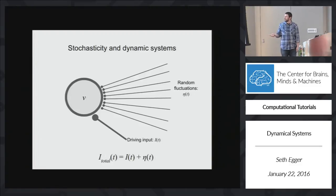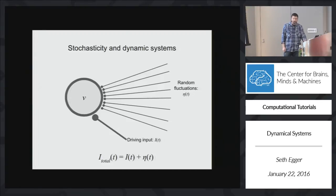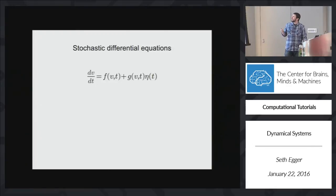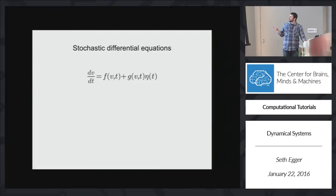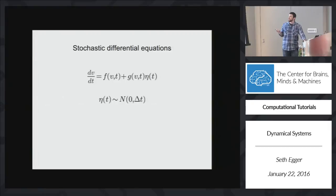We can write down the total input to this neuron as i plus eta. So what is this eta? It's a random term that we add to our differential equations. Here on the left we had our original differential equation, and here on the right we've added this eta term. Eta just comes from a Gaussian distribution whose variance scales with the time step delta t that you choose.